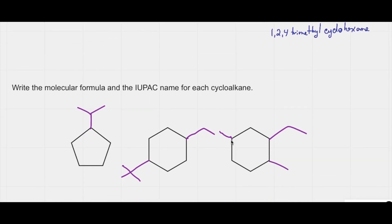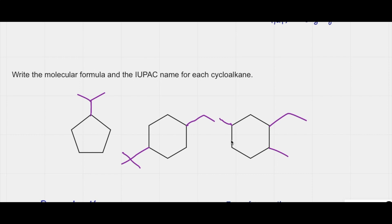Let's go ahead and write names for each of the cycloalkanes here. Our ring contains five carbons, so it is cyclopentane. Since I have one substituent only, I do not have to give it a number. The substituent that looks like a V is called isopropyl. So the name is isopropyl cyclopentane.